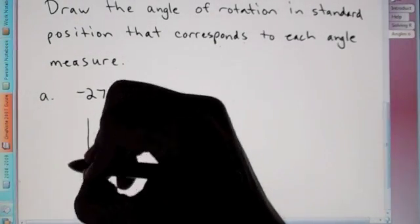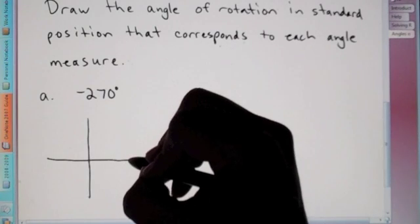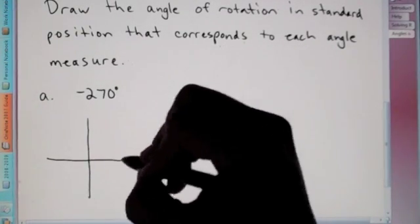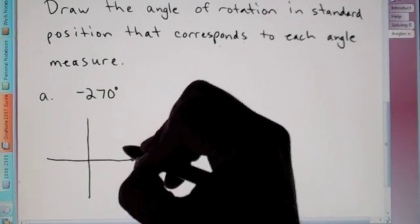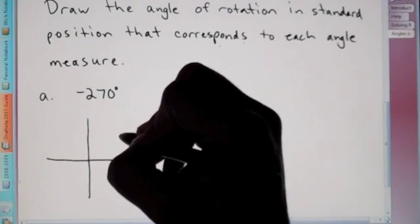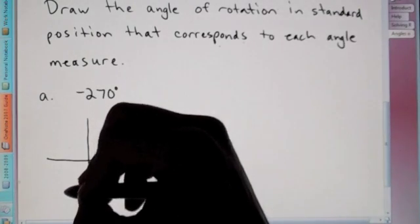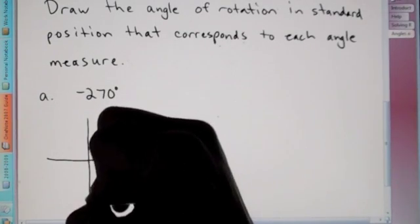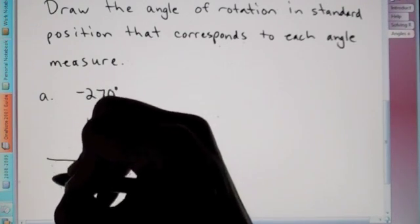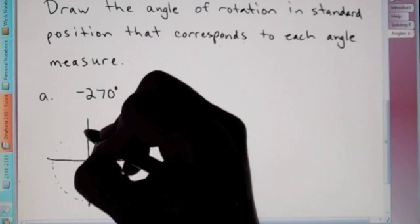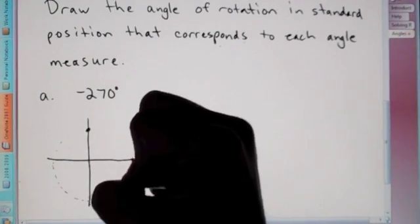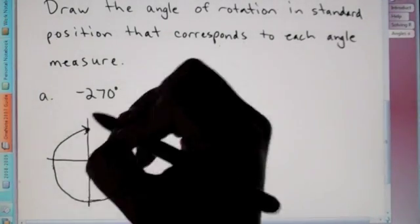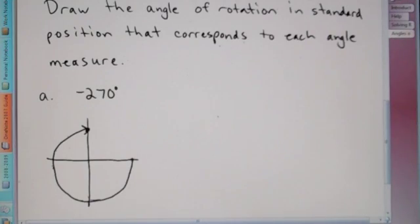Negative 270 degrees. Again, we have our xy-axis. Here's standard position starting here. Starting anywhere here on the x-axis. I try not to do it too close there so we can have some room. So, I try to put it somewhere out here. Now, since it says negative, remember, positive goes counterclockwise. So, negative is going to go clockwise. So, we're going to go over.